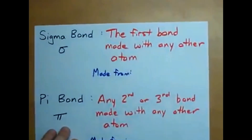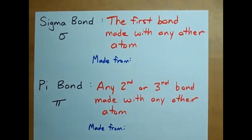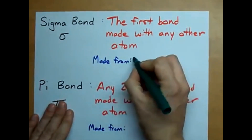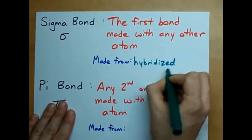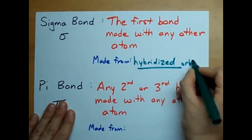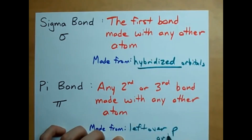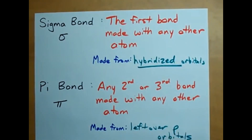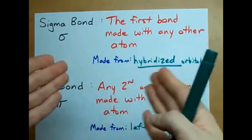But what does that even mean is the real question. Here's the deal when it comes to electron configurations: sigma bonds are always made from hybridized orbitals, whereas pi bonds are made from leftover p orbitals. We decide what the hybridization of the carbon is based on how many multiple bonds it makes.